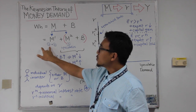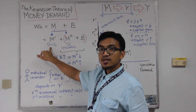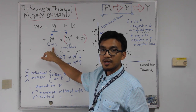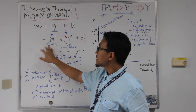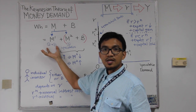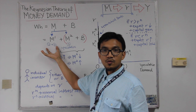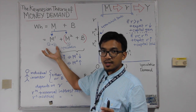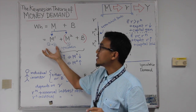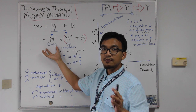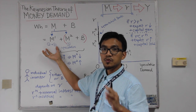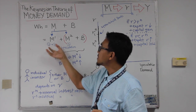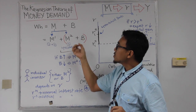M1 would be the transaction and the precautionary demand for money. As we know, it has no relationship with interest rate — it has a positive relationship with income. So it doesn't really fit our purpose to explain the negative relationship between money demand and interest rate.